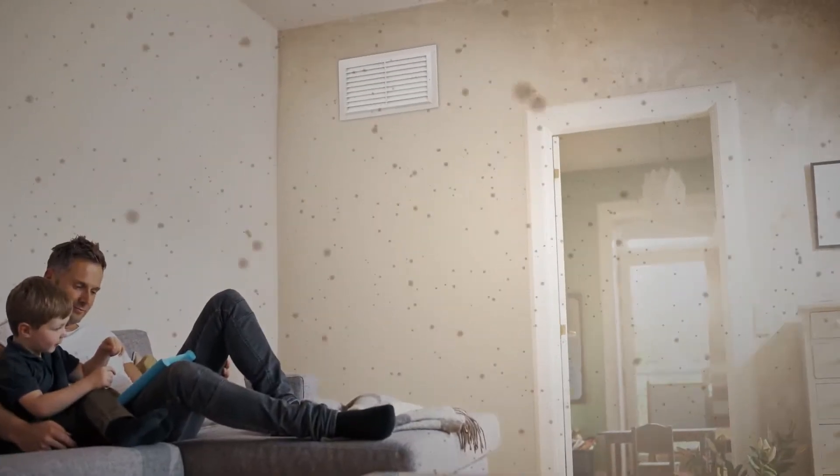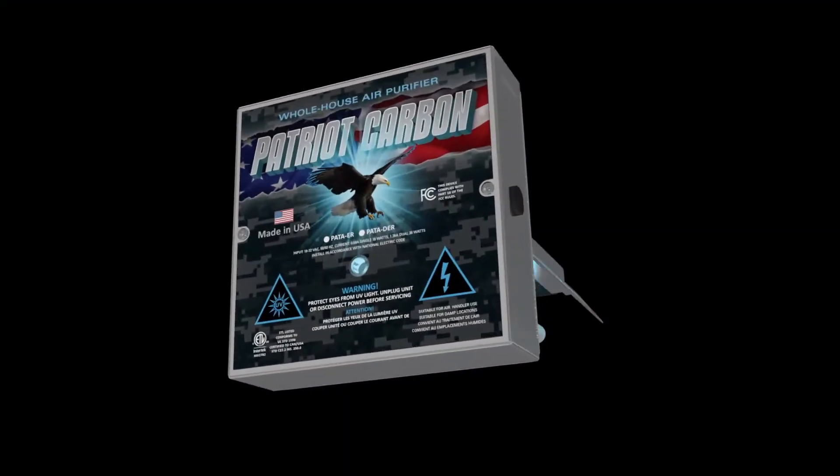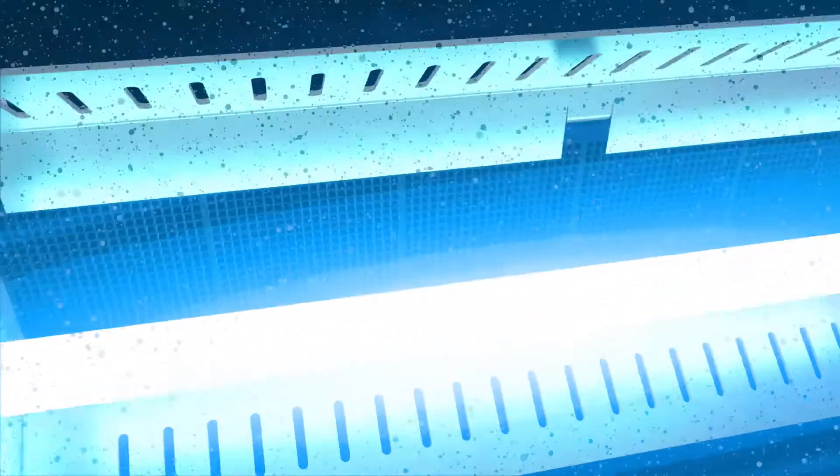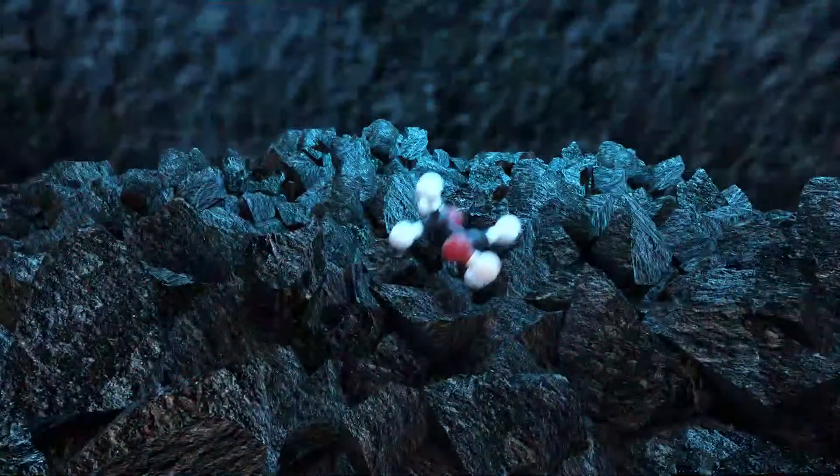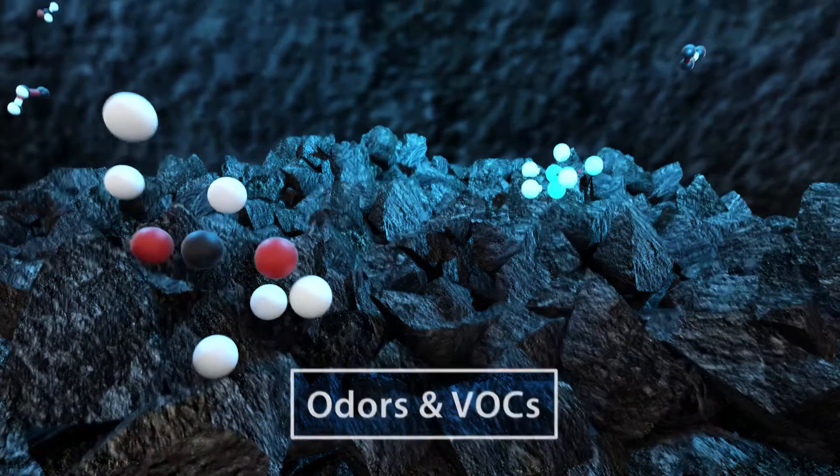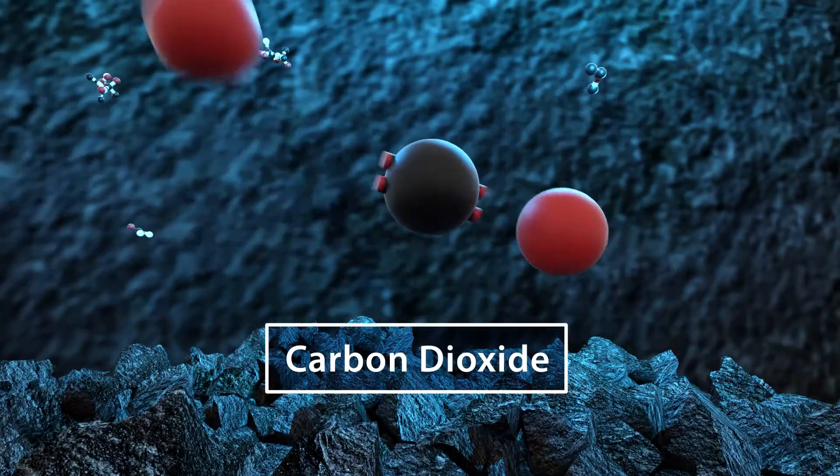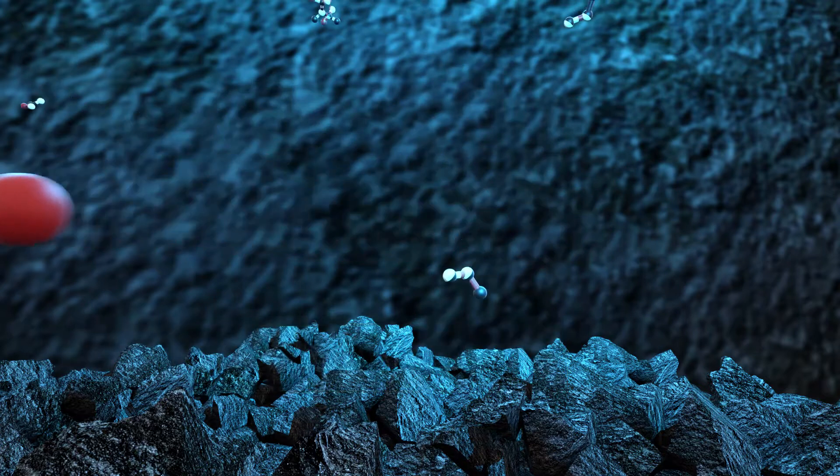As the air is circulated, contaminants are treated by the Carbon Catalyst system. UVC light energizes the carbon cells, which capture and neutralize odor-causing VOCs. What remains is harmless water vapor and carbon dioxide, which are released back into the air.